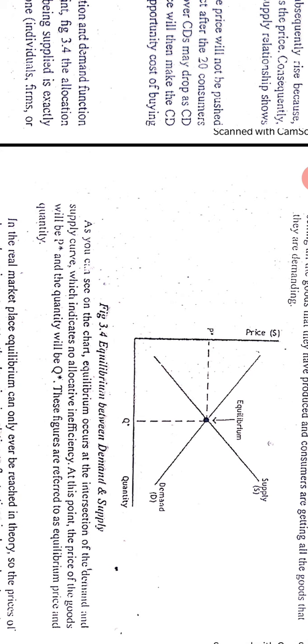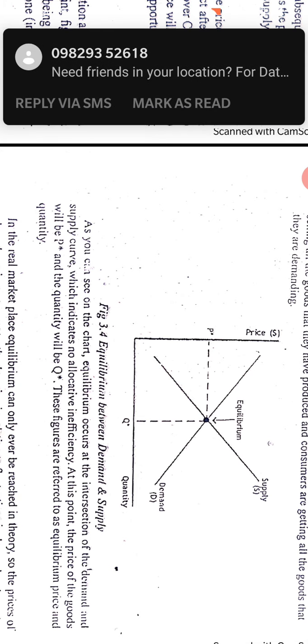Equilibrium means, for example, suppose Maruti produces 20 lakh cars, they are able to sell all 20 lakh cars, and there are 20 lakh customers interested in Maruti who are all able to buy the cars in that particular year. This is the equilibrium between demand and supply.